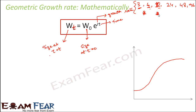So now that we have discussed both types of growth rate — arithmetic and geometric — we have come across the term growth rate R. So R is defined as the growth rate. Now let us discuss some very important points about this growth rate.